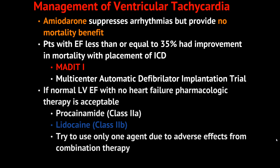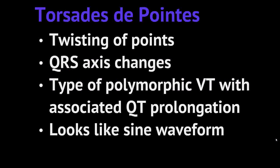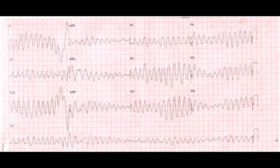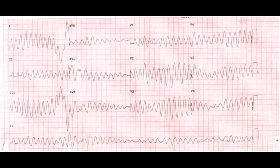Now let's talk about torsades. Torsades is called the twisting of points because the QRS axis always changes. Torsades is a type of polymorphic VT associated with QT prolongation, and it looks like a large sine waveform. Here's an example of torsades on an EKG — you'll notice the large QRS complex that is ever-changing from getting smaller to bigger, appearing like a sine graph.